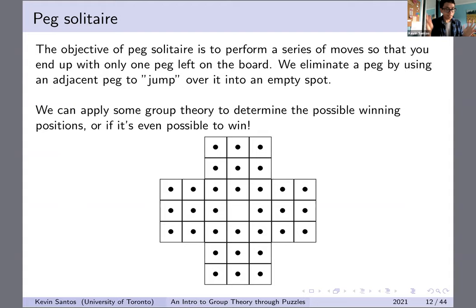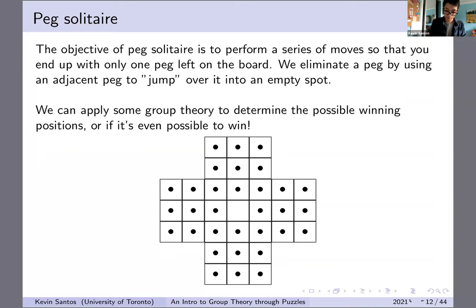Now I'll move on to the more interesting stuff, which is our first example: Peg Solitaire. You might be familiar with this game. The objective is you're given this board with pegs in the little slots, and you want to perform a series of moves so that you end up with only one peg left on the board. You can do that by jumping over pegs into empty spots — you eliminate a peg by using an adjacent peg to jump over it into an empty spot. For example, I can take this peg, jump over it into this square here, and then this peg is gone and this square is also empty. That gives a new configuration of the board, and I keep doing that until hopefully I get back just one single peg left.